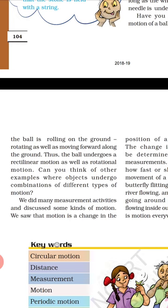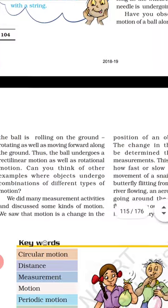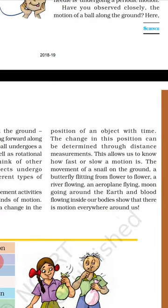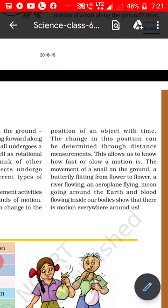So many motions are in our daily life. How fast or slow is the motion? The movement of a snail — it moves very slowly. A butterfly flitting from flower to flower moves much faster. An aeroplane flying, the moon going around the earth — these are some examples of motion. Blood flowing inside our bodies shows that there is motion everywhere around us.